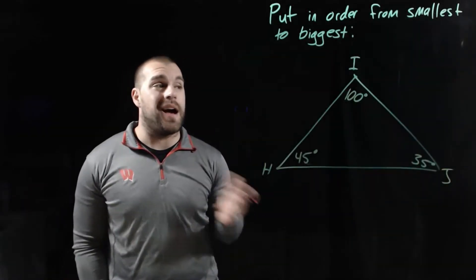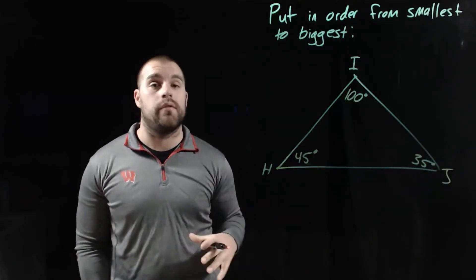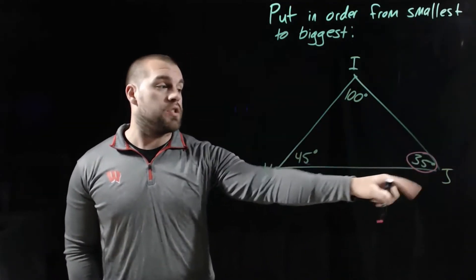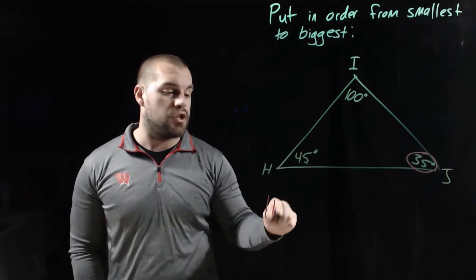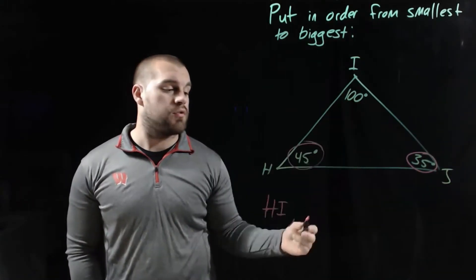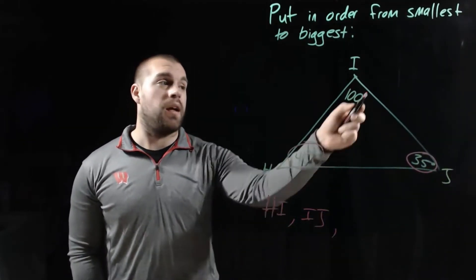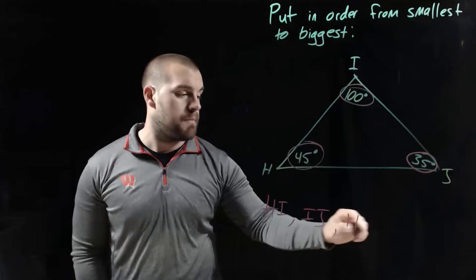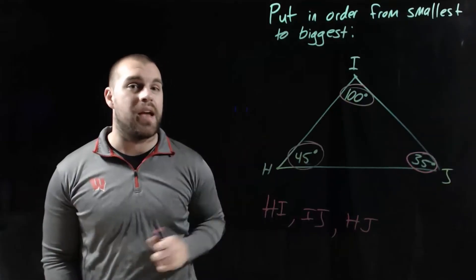This can also work in the opposite direction. On this triangle we're given the angle measures and we're going to put the side lengths in order from smallest to biggest. The smallest angle is 35 degrees, which is angle J, so across from it is the smallest side HI. The next smallest is the 45 degree angle, across from which is side IJ. Our biggest angle is 100 degrees, so across from it is the biggest side HJ.